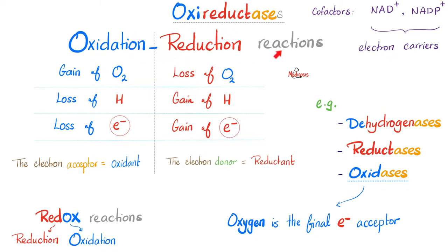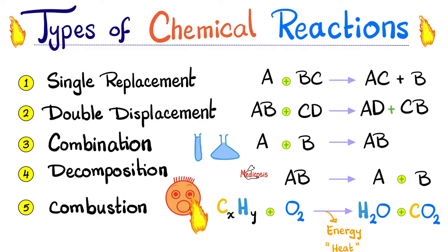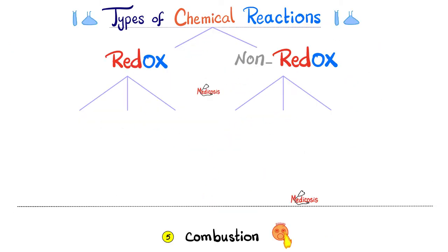Oxidation reduction reactions are also known as redox reaction. Reduction oxidation reactions. Do you see what I see? Do you see the types of chemical reactions? They can be nested under redox reactions or non-reduction oxidation reactions. And then we have combustion reactions and others.